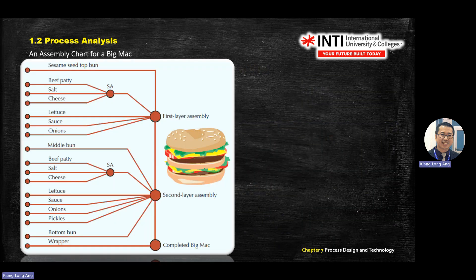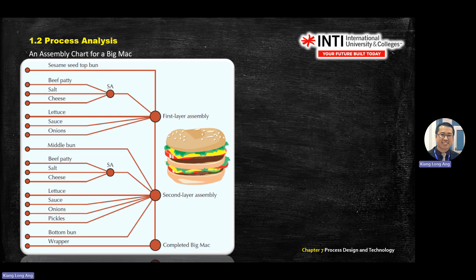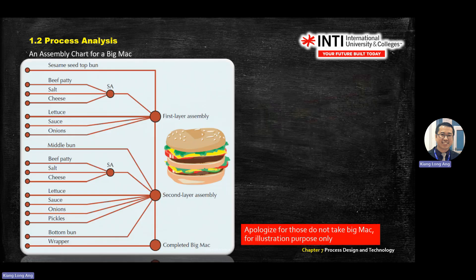For example, this is the Big Mac assembly process flow. They have a first layer and a second layer, and then a complete Big Mac. The first layer combines all the ingredients. Then they build the second layer, then combine first and second to become the complete product.